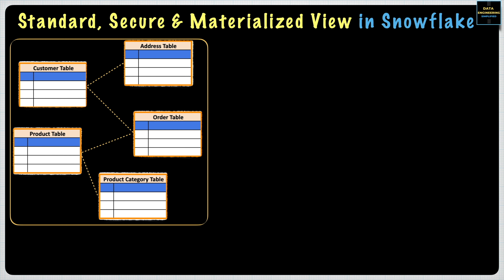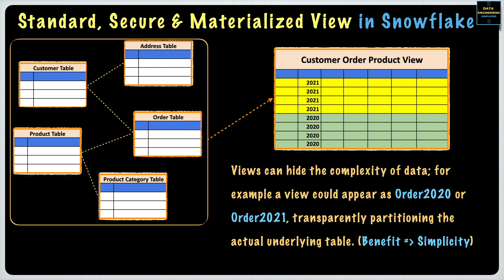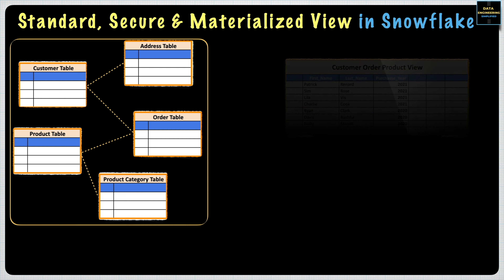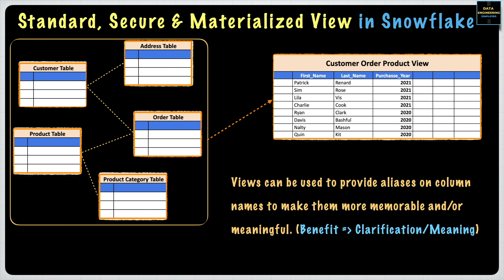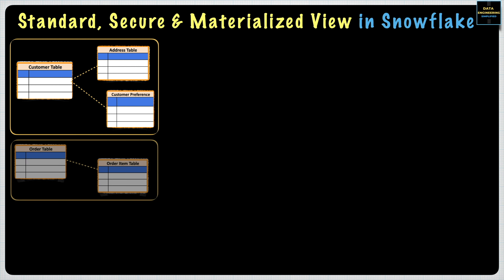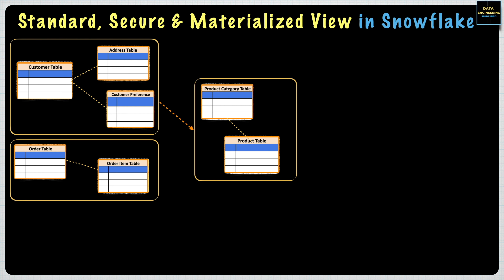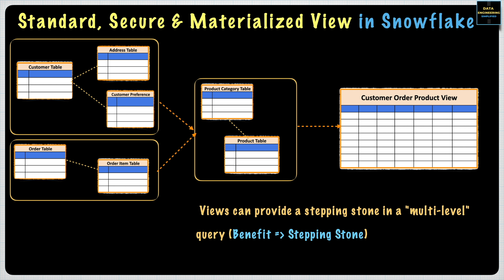Views can hide the complexity of data. For example, a view could appear as ORDER2020 or ORDER2021, transparently partitioning the actual underlying table — the benefit is simplicity. Views can be used to provide aliases on column names to make them more memorable or meaningful — a clear benefit of meaning to underlying complex data entities. Views can also provide a stepping stone in a multi-level query, limiting the degree of exposure of a table, allowing abstraction — a clear benefit of stepping stone. A view is an abstraction layer and it does what any good abstraction layer does.